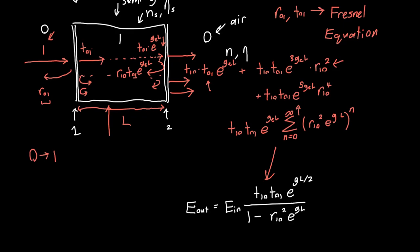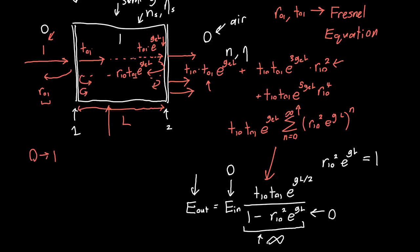But notice something really interesting in the denominator: what happens when R_10 squared times E to the GL is equal to 1? This denominator will become 0, and this whole term multiplied by our incident electric field will blow up to infinity. So for a teensy tiny incident electric field, maybe even zero, we can get a huge output electric field or a huge output intensity.